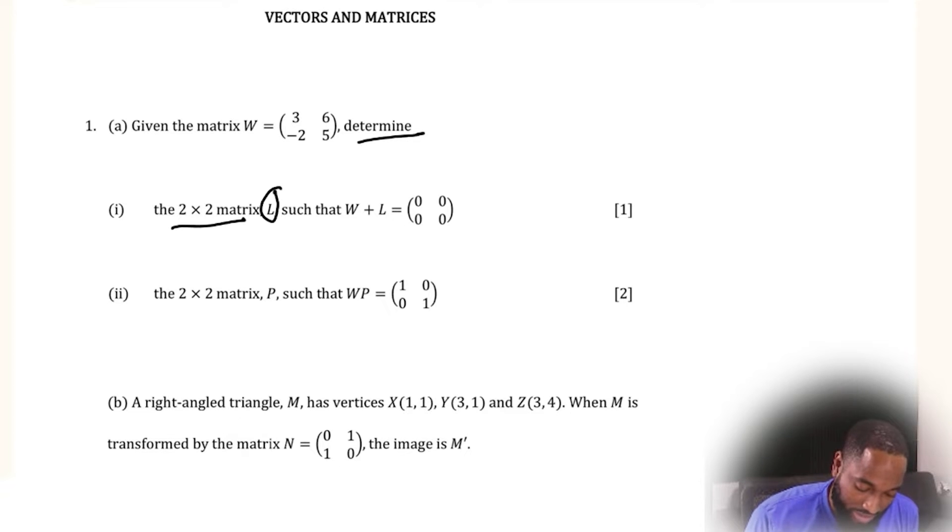Such that when we add W and L, we get the null matrix. In other words, they give you a number and they're asking you what number I can add on here that will send this number to zero. Obviously, the number is negative three.